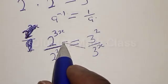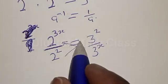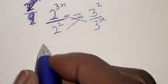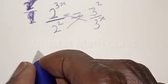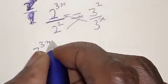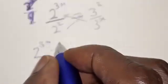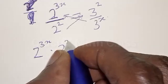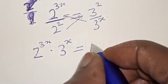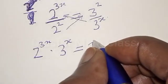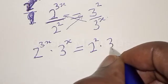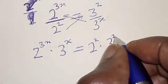Now let's cross multiply. Then we have 2 raised to power 3x multiplied by 3 raised to power x, equal to 2 raised to power 2 multiplied by 3 squared.